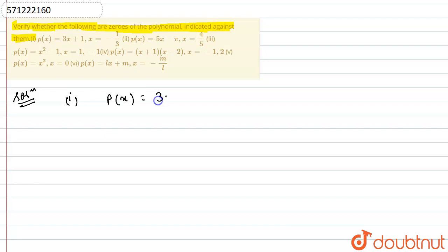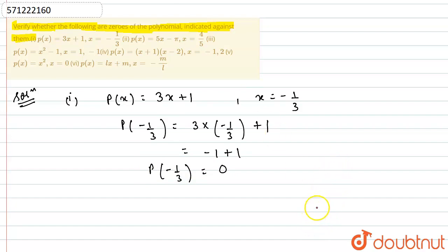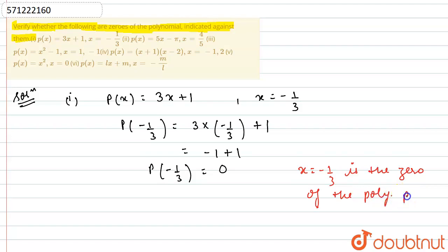The first part is p(x) = 3x + 1 and I need to check this at x = -1/3. So I will find p(-1/3). This equals 3 multiplied by -1/3 plus 1. The 3s cancel each other, leaving -1 + 1, and p(-1/3) comes out to be 0. Hence, x = -1/3 is the zero of the polynomial p(x).